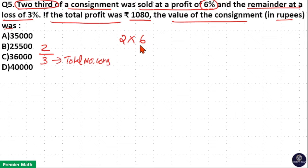Total profit from this 2 units is equal to 2 into 6%, that is 12%. This is profit.